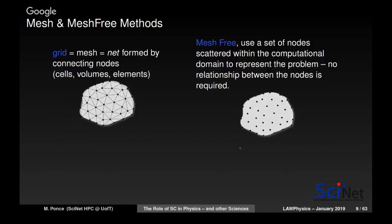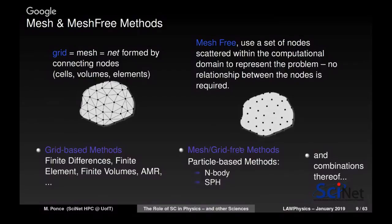In mesh methods, you need a grid — a system of coordinates laid down on your computational domain. You discretize this domain and assign physical quantities like volume, density, temperature, and pressure to those points. In mesh-free methods, you still need points, but there is no geometrical relationship between them. Examples of grid-based methods include finite difference, finite element, finite volumes, adaptive mesh refinement, and spectral methods. Mesh-free or particle-based methods include N-body simulations and smooth particle hydrodynamics (SPH).